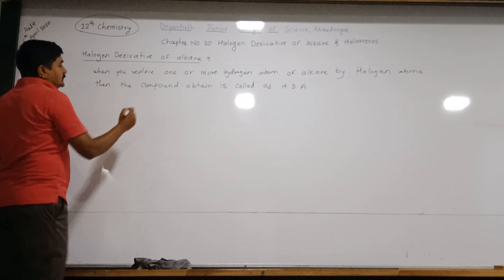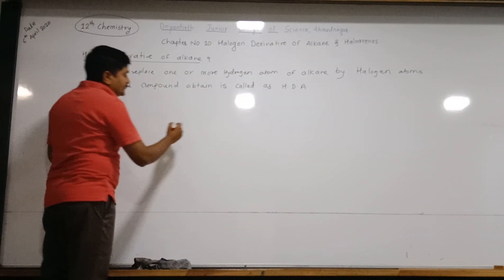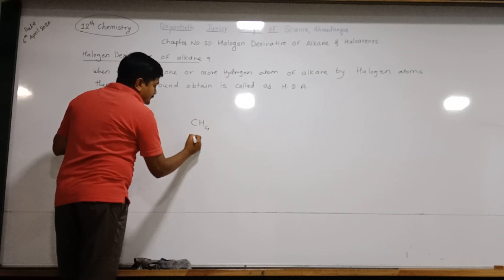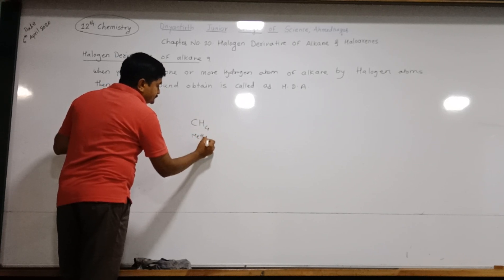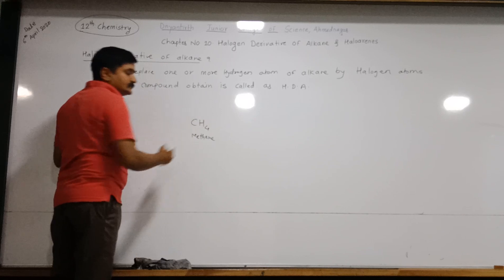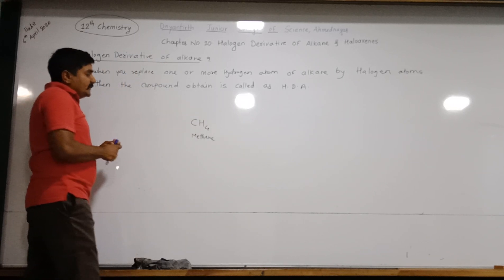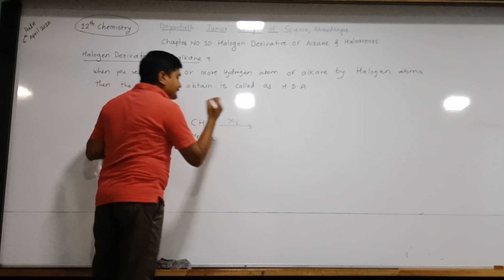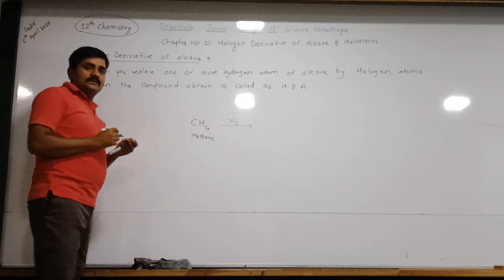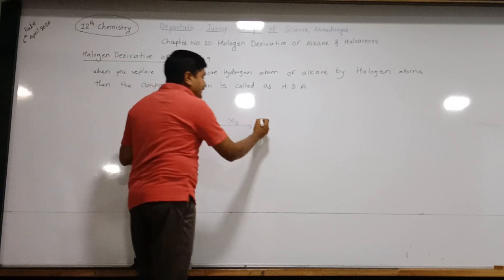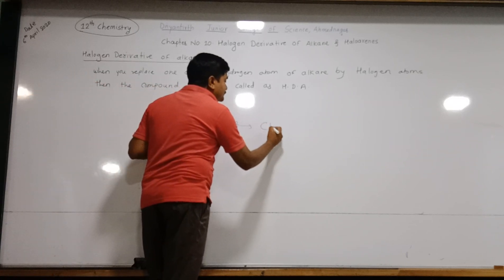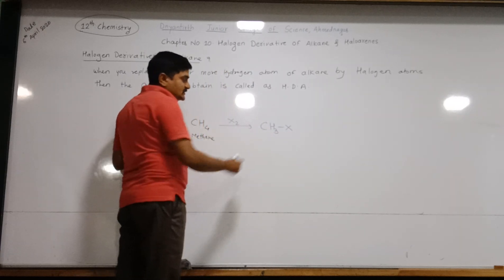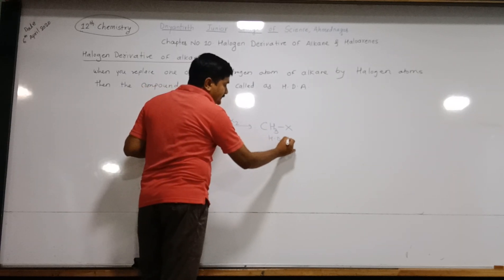Let us consider one alkane, that is CH4. When you replace one hydrogen atom of the alkane by one halogen atom, the compound obtained is called a halogen derivative of alkane.